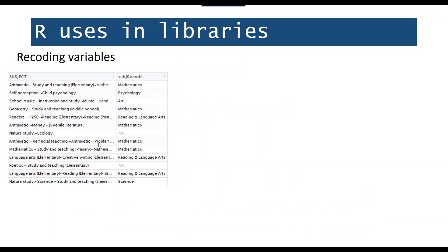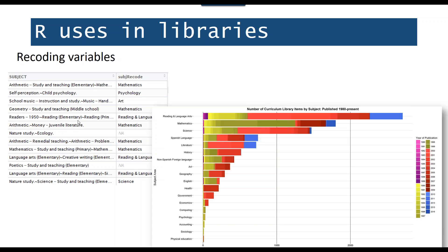Another use case is recoding variables. This is a subset of data from our K-12 curriculum library. We wrote a script that says: anytime you detect in the subject field the terms arithmetic, geography, or algebra, create a new field that says 'mathematics.' We ran through and did that for all of our subjects, which allowed us to analyze our collection by core subject area. We pulled in year-of-publication data too, and at a glance we could see mathematics is very strong in the late 90s but doesn't have many titles from the 2010s — and we used this to make purchasing decisions.